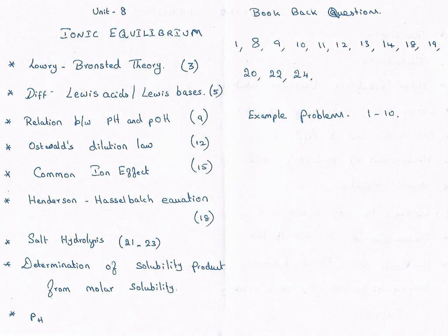Unit 8 is the Ionic Equilibrium. This topic covers Lowry-Bronsted theory. The difference between Lewis Acid and Lewis Bases. You need to know what acids and bases are, and know the difference between Lewis Acid and Lewis Bases. Then, the relation between pH and pOH — there is a derivation worth around 2 marks or 3 marks. This is page number 3, 5, 9.